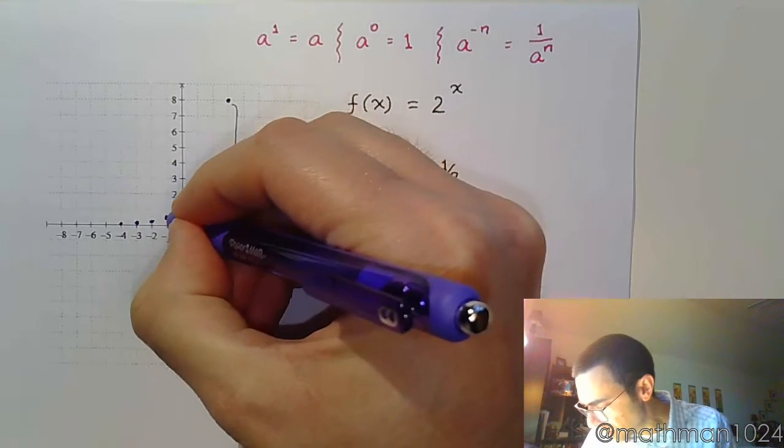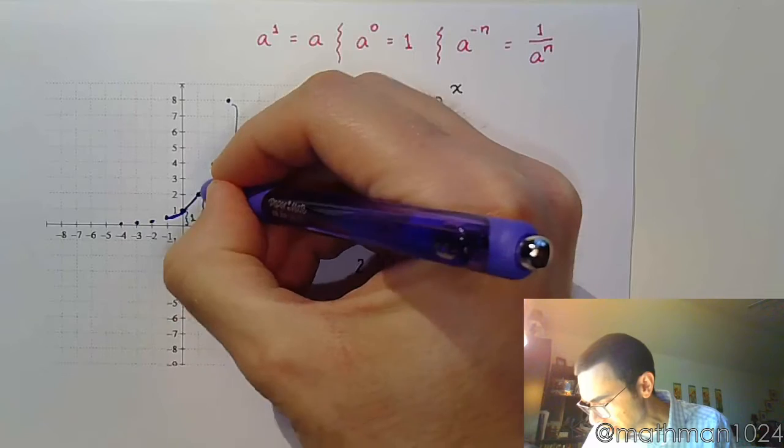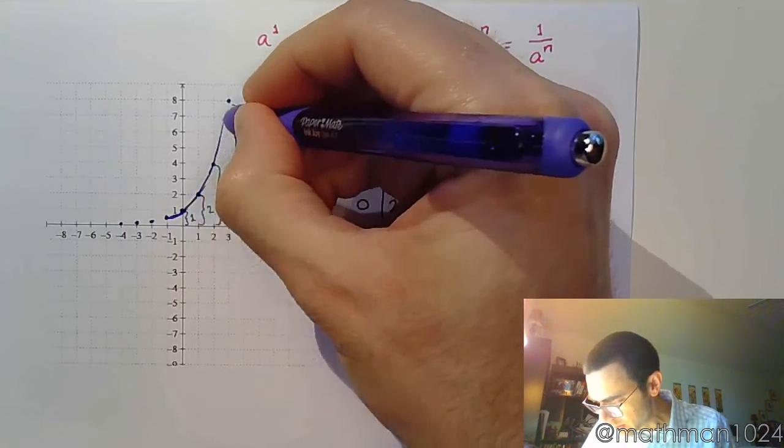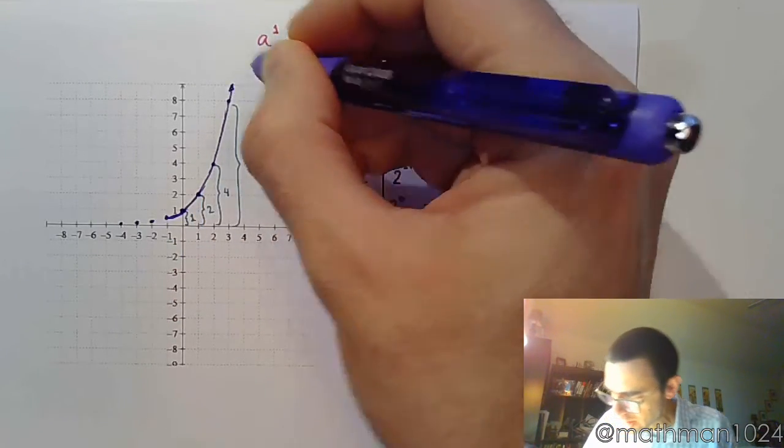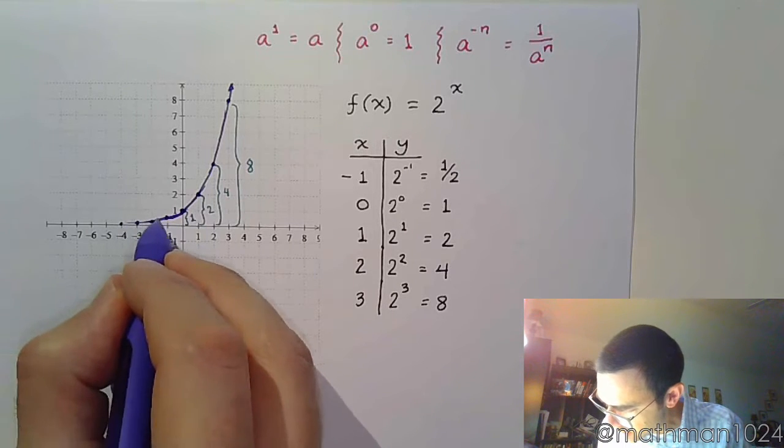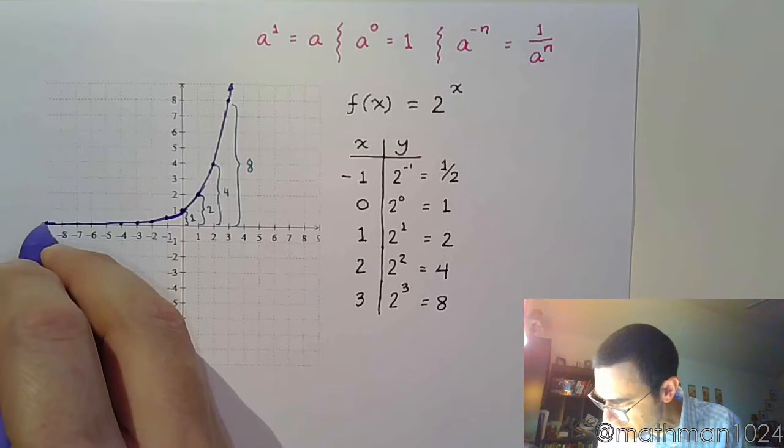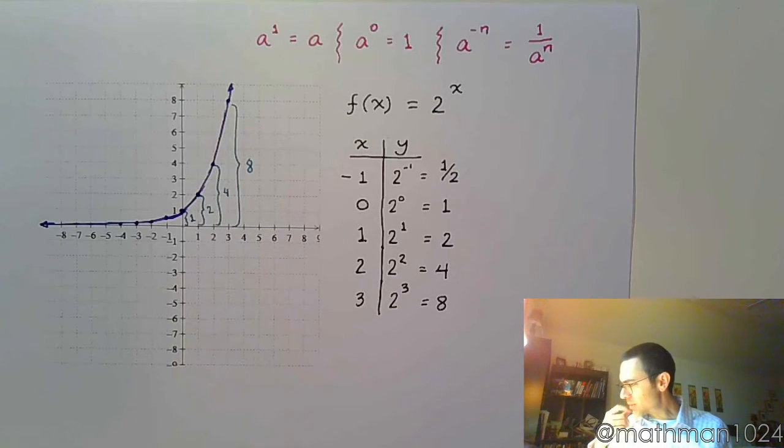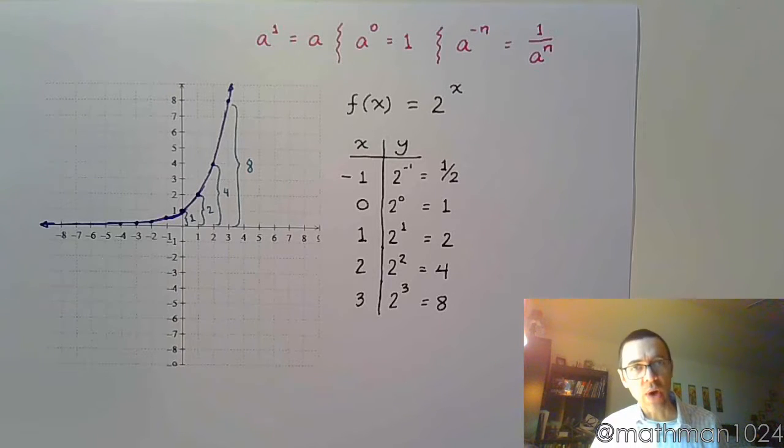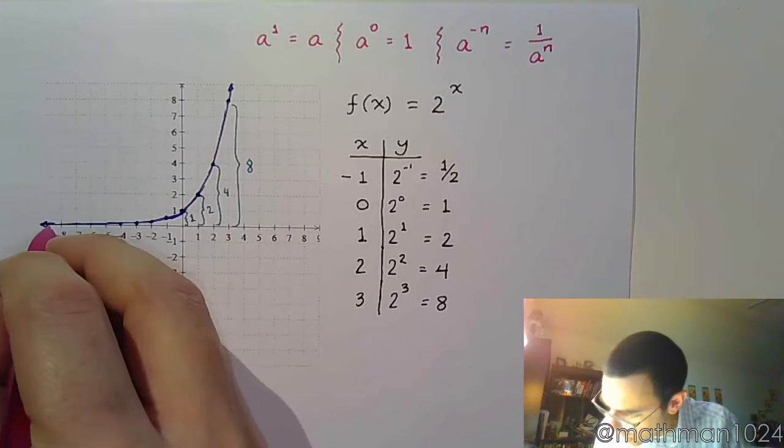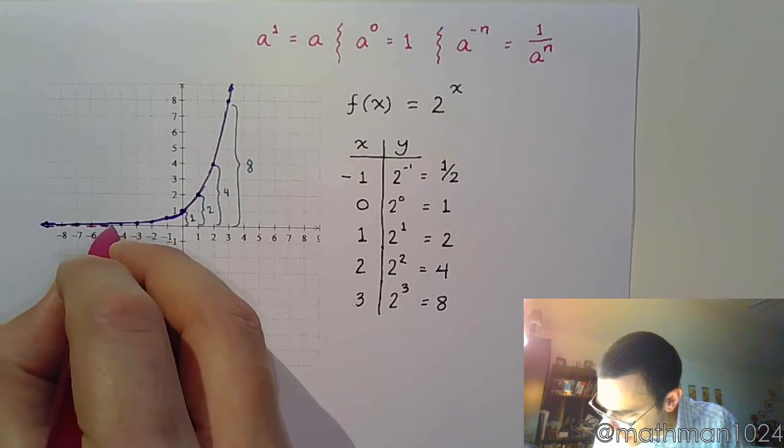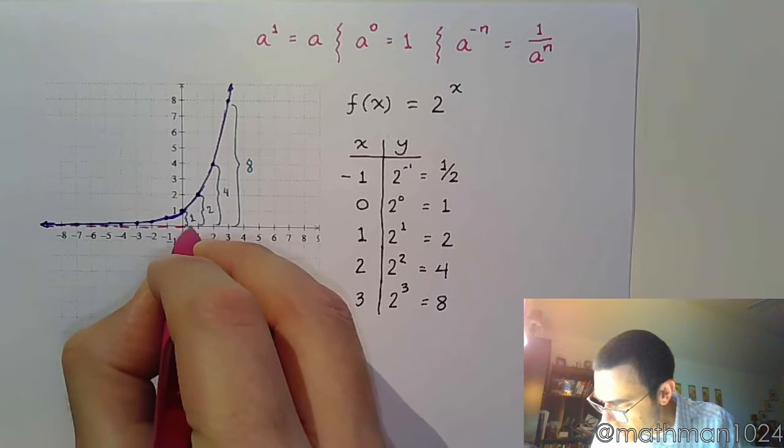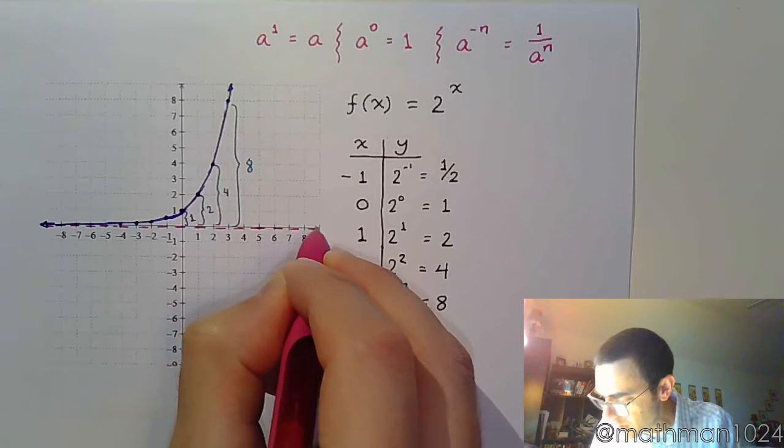So as you connect these points to get the shape, it's going to look something like this. Now, we've talked about these guys in the past. Asymptotes. We have these with rational functions. We have them with exponentials. So you have a horizontal asymptote for exponentials.